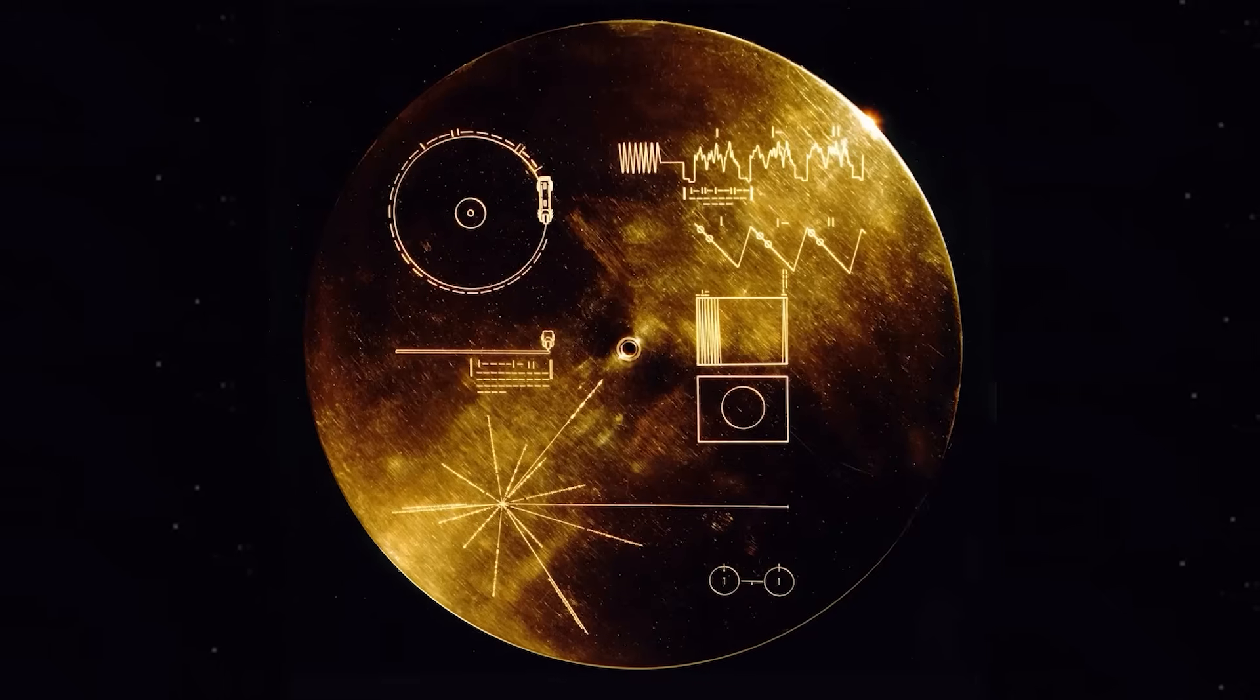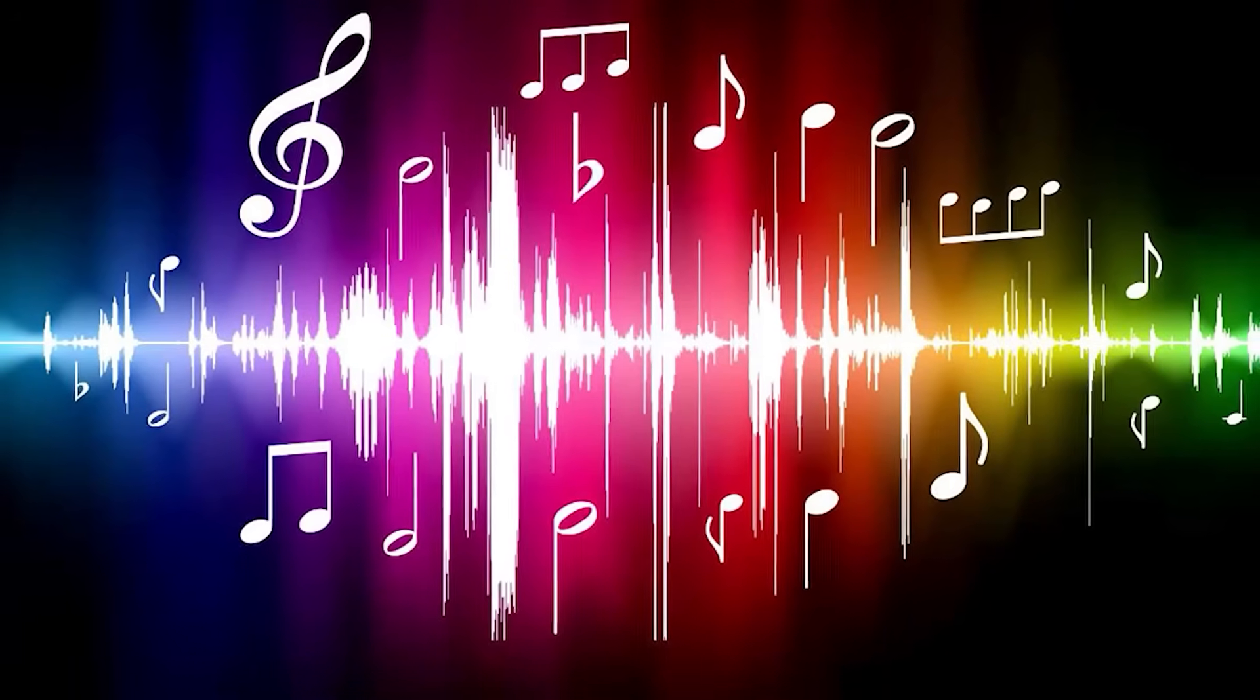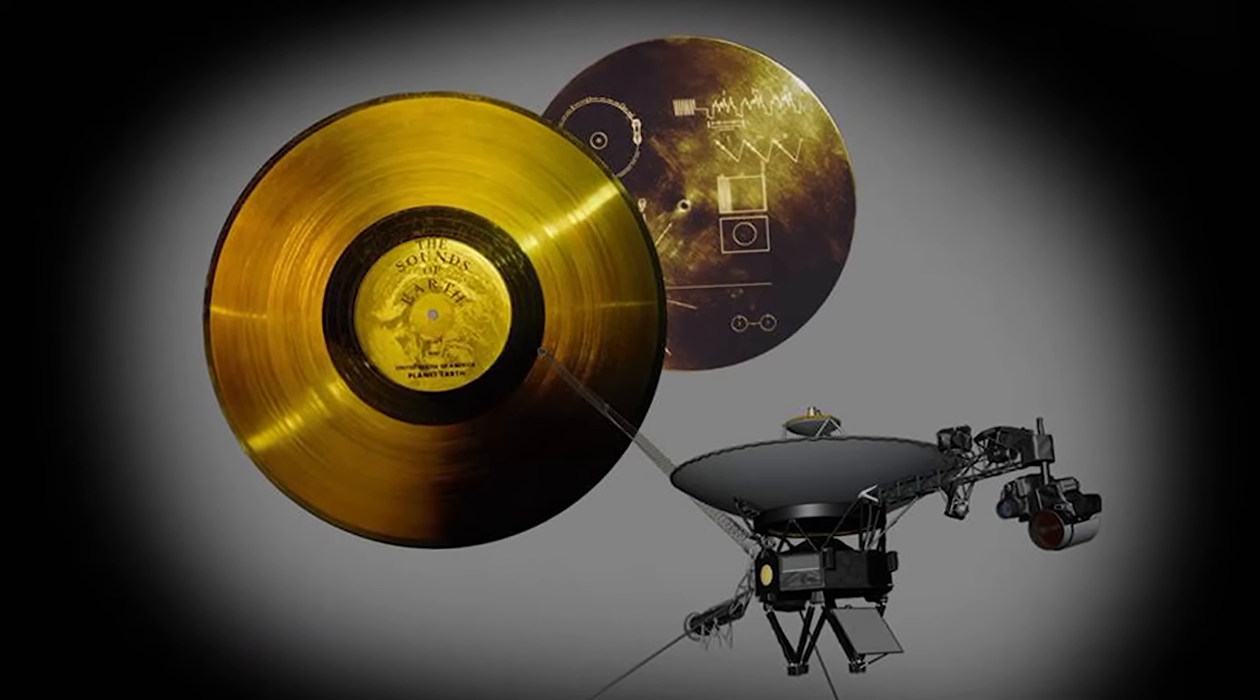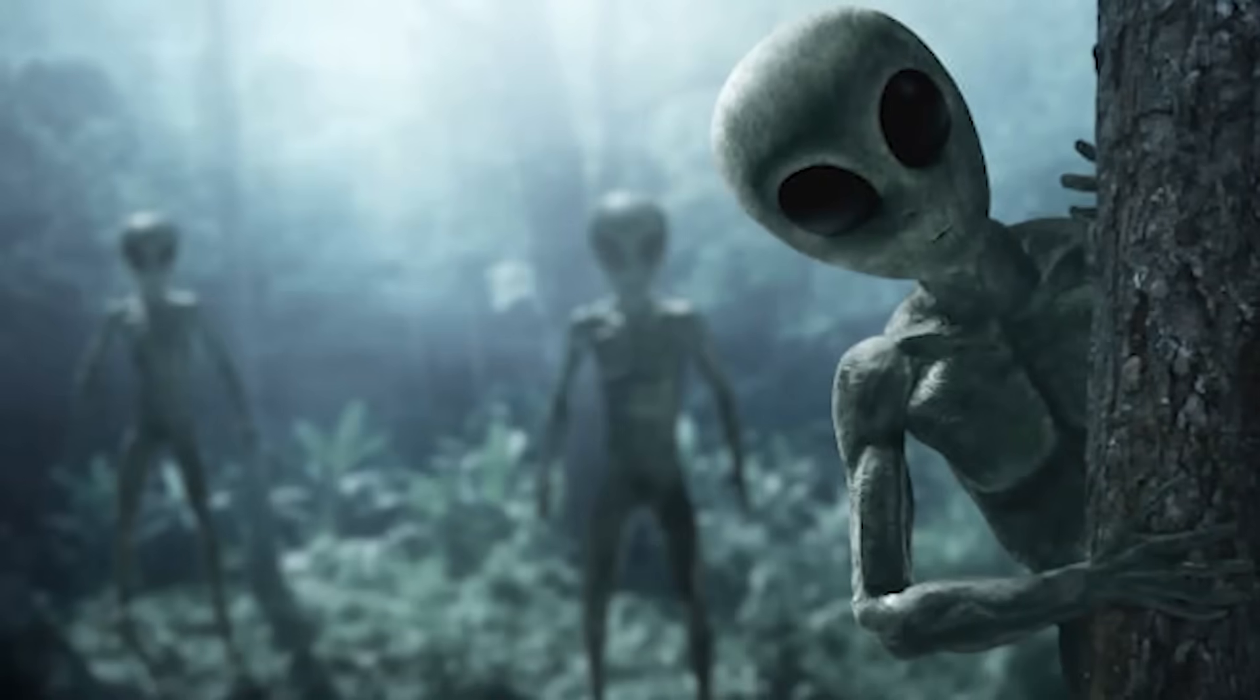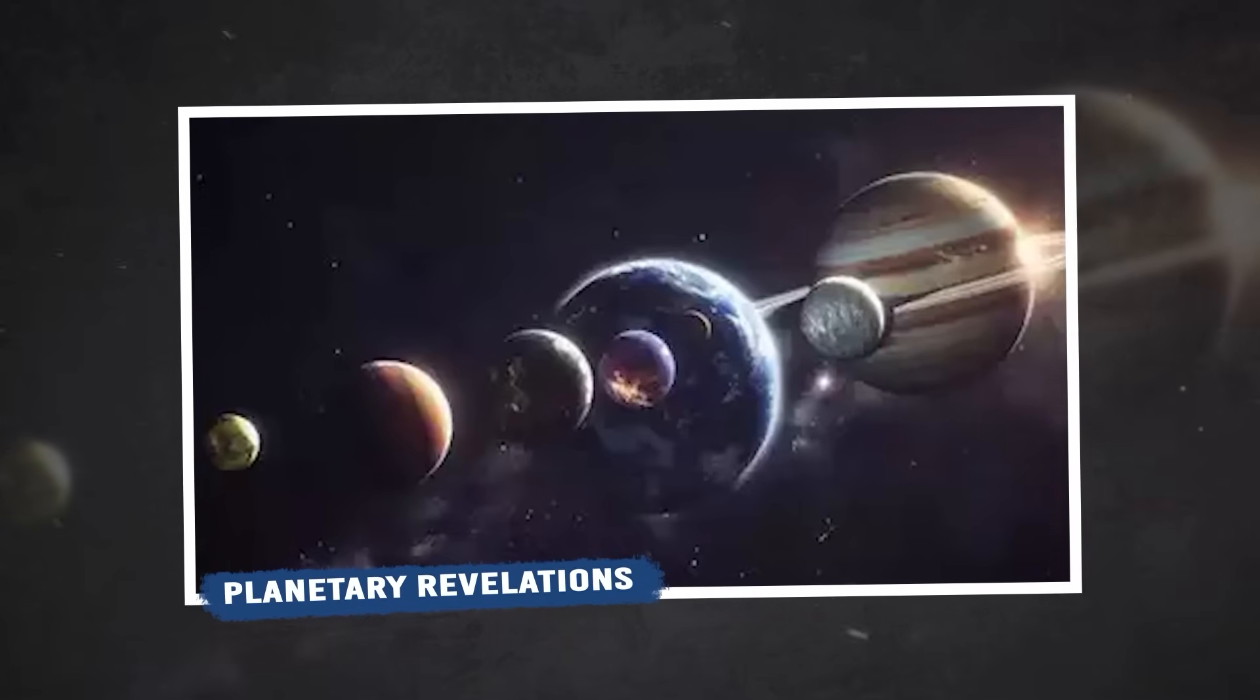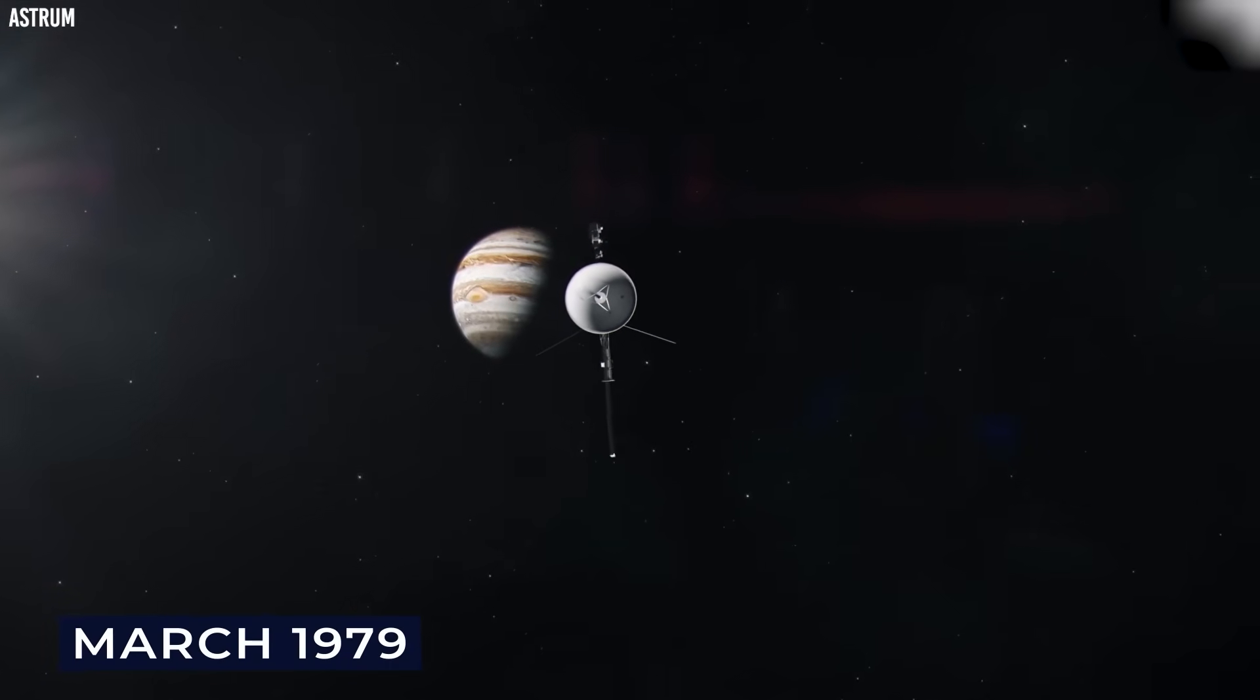Voyager's data rate is painstakingly slow, only 160 bits per second, a tiny fraction of modern internet speeds. Yet despite its limitations, Voyager 1 continues to collect critical data. Its cosmic ray sensor detects high-energy particles originating from beyond the solar system. The plasma wave instrument measures electron densities in interstellar space. Meanwhile, the magnetometer tracks invisible magnetic fields between the stars. Combined, these tools paint a rare and valuable picture of a region we cannot access in any other way, the vast medium through which our solar system travels around the Milky Way.